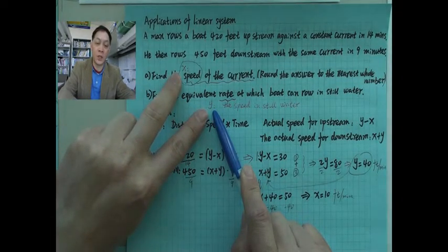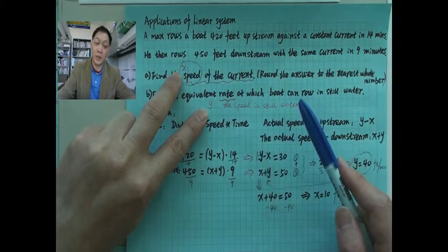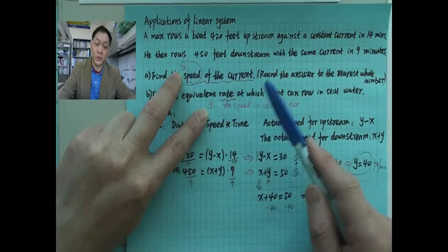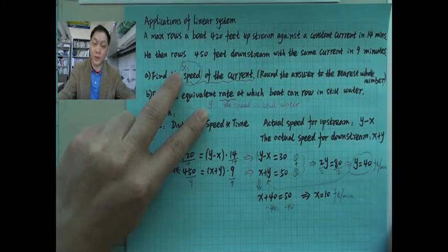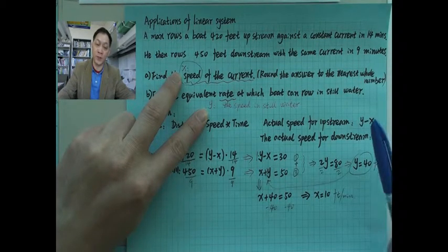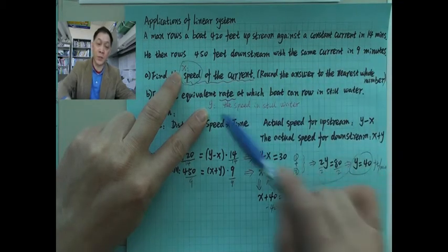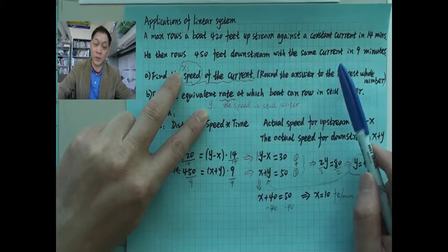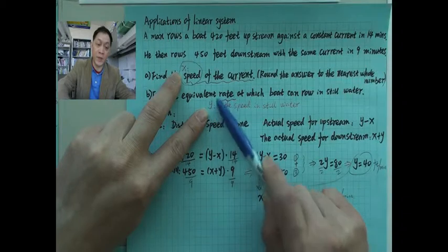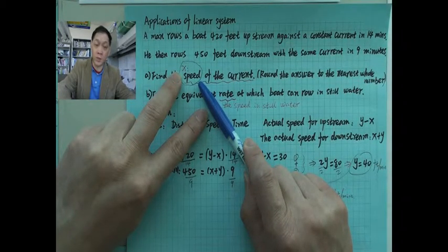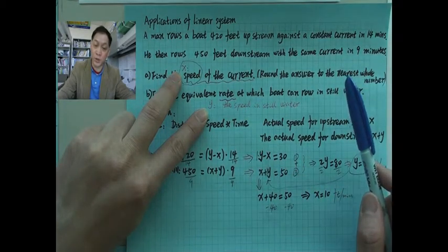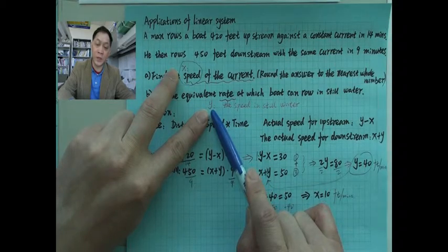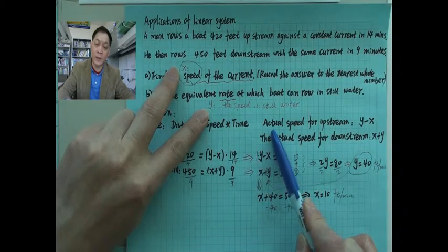Here, y must be greater than x, because if the rowing speed were less than the current speed, the man could not go upstream at all. Since this man did travel 420 feet upstream, his rowing speed y must exceed the current speed x.